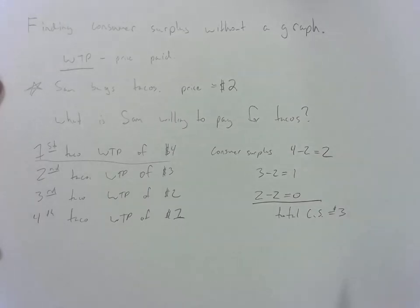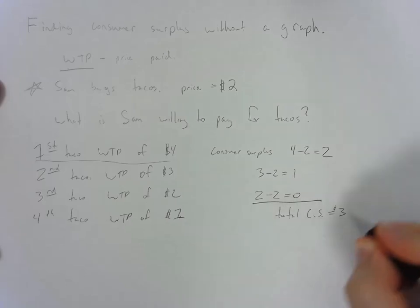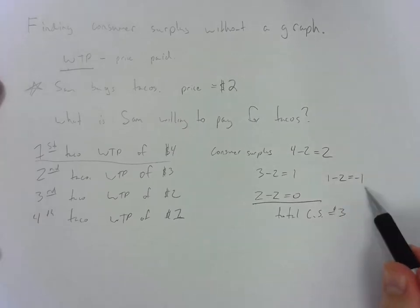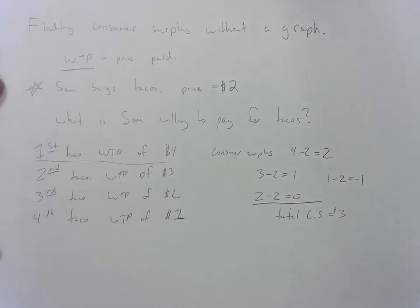Now, if the question assumes that she purchases the fourth taco, we'd have a willingness to pay of $1 minus the price paid of $2, giving a negative consumer surplus of $1. That means the total consumer surplus would be only $2. This is a bit of a trick question and not common in most econ classes.